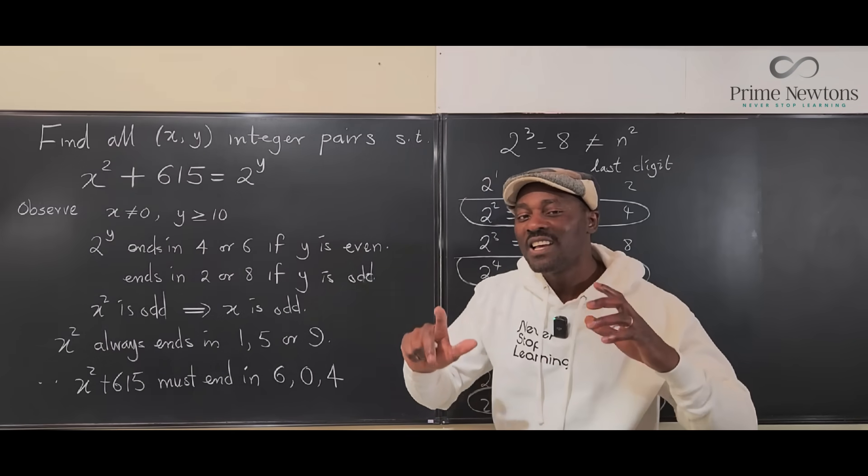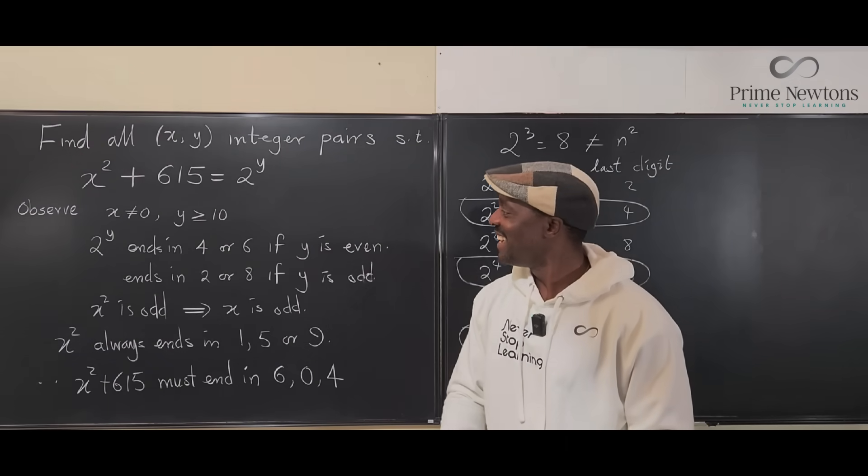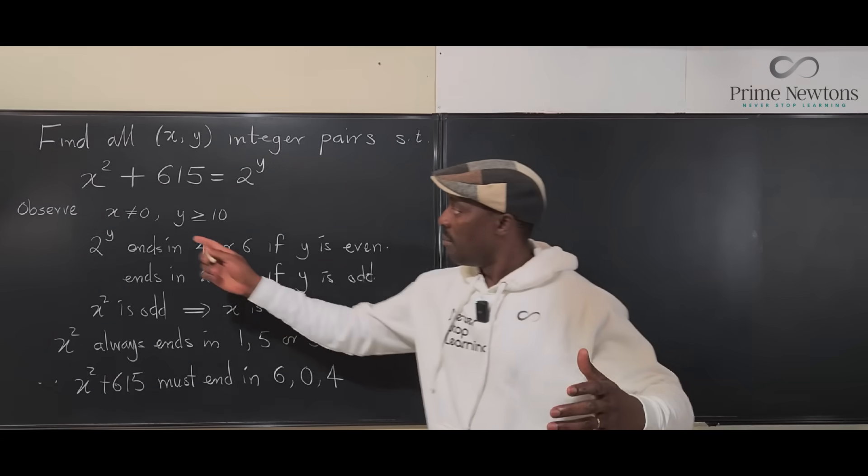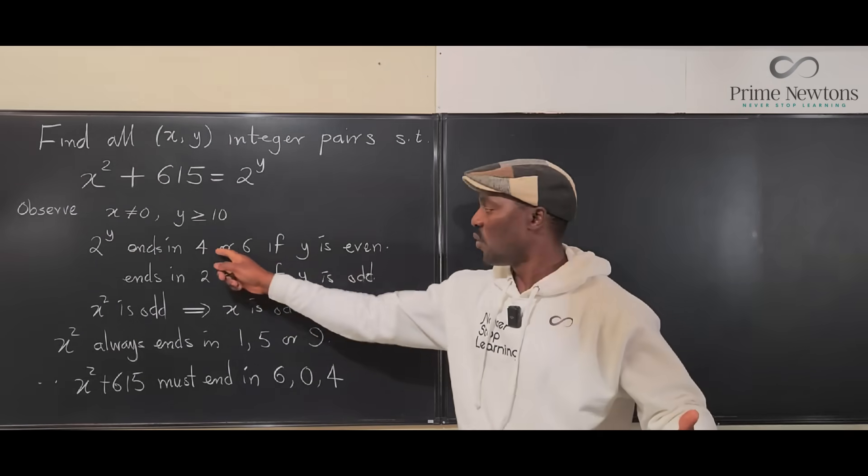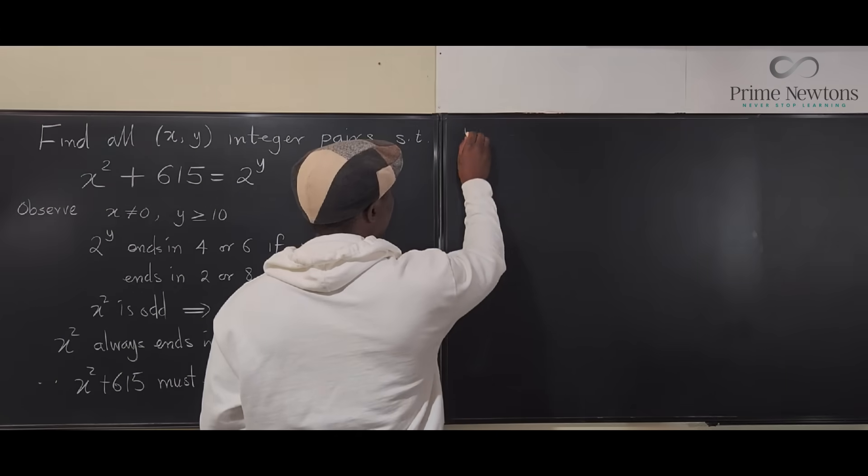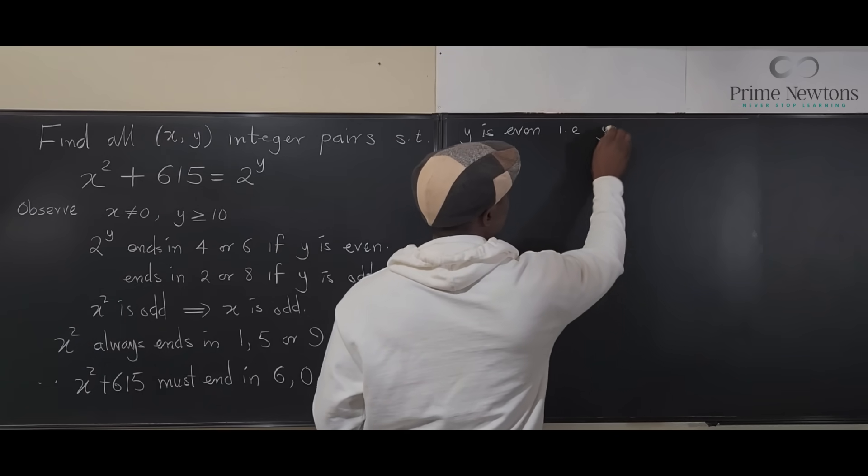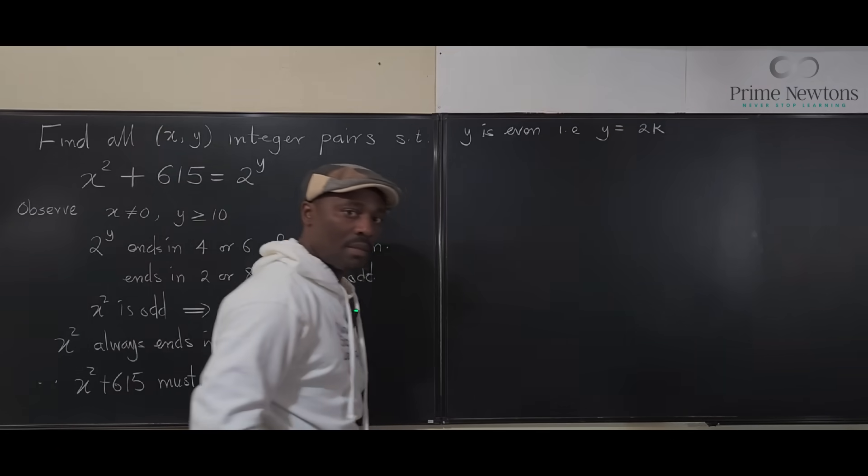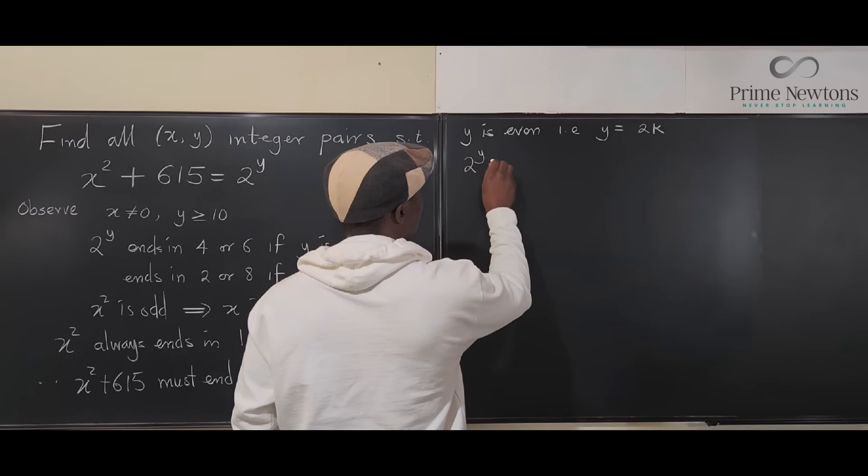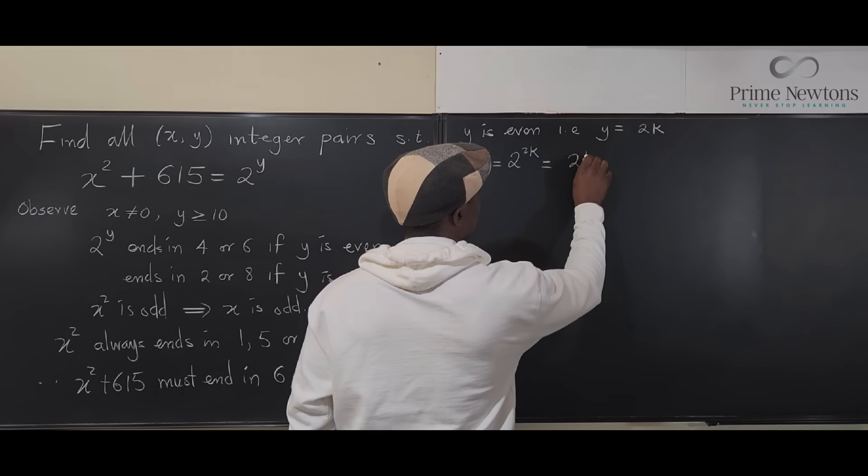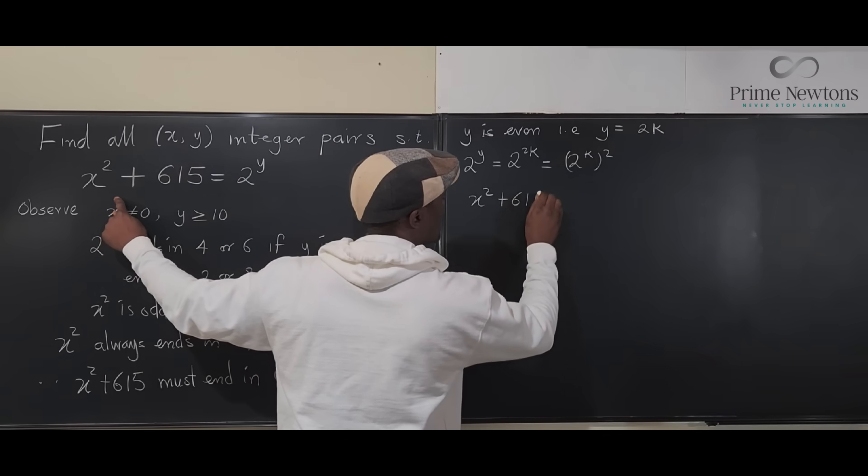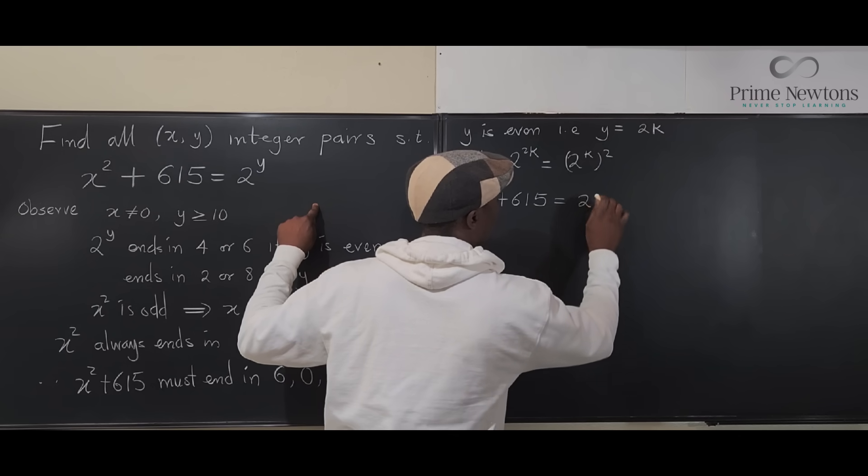So, we can write y as a square also. Then, we have difference of two squares if we move this here. Beautiful. So, by observation, we know that 2 to the y ends in 4 or 6, because 0 is not an option for us. And therefore, y must be even. Y is even. That is, y must be equal to some 2 times k. If y equals 2 times k, it means that 2 to the y can be written as 2 to the 2k, which is 2 to the k squared.